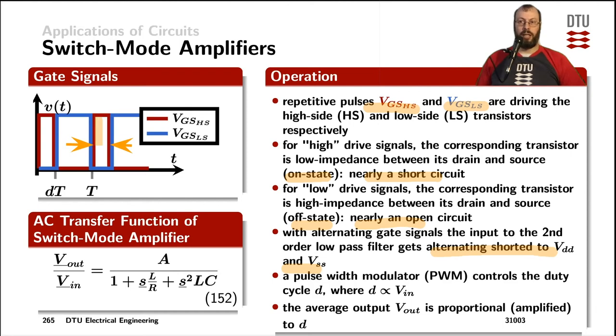we are seeing a duty cycle of the high side MOSFET of around 25% and the low side is on for about 75%. That means that the switch node is approximately also 25% of the time pulled towards the positive supply rail and 75% of the time to the negative supply rail.